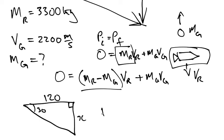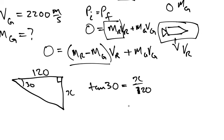Tan 30 is opposite over adjacent, which is X over 120. So X equals 120 tan 30, which is 69.3.